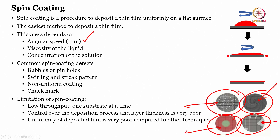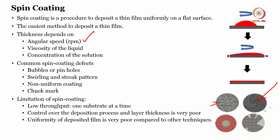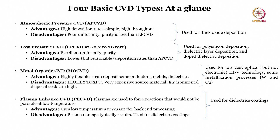These are some defects that may occur while depositing a thin film using spin coating. The limitations of spin coating include: low throughput (one substrate at a time), poor control over deposition process and layer thickness, and poor uniformity of the deposited film compared to other techniques.